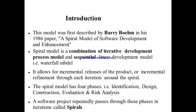This model allows for incremental releases of the product or incremental refinement through each iteration around the spiral. Like the incremental model, the product is delivered increment-wise. The first iteration delivers a basic version, then subsequent iterations deliver more advanced versions, and the last iteration delivers the final product.